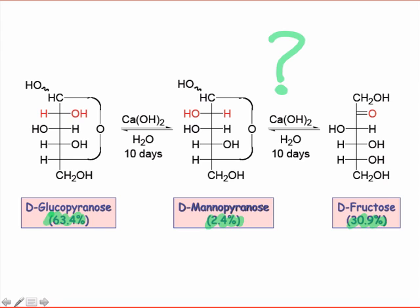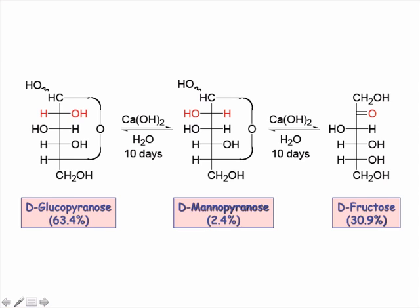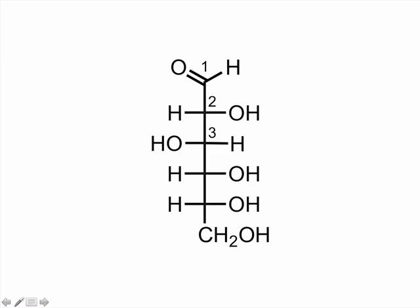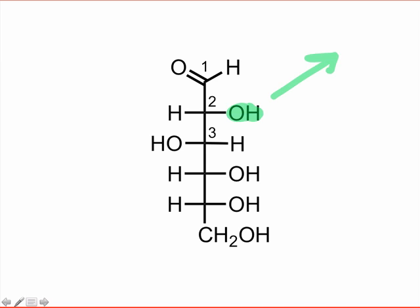To begin thinking about the mechanism of this process, consider the open-chain form of glucose and what groups you might envision as acidic. Of course, we could imagine the hydroxyl groups as acidic, and this is one important mode of reactivity for carbohydrates — for instance, when an electrophile is added along with base.